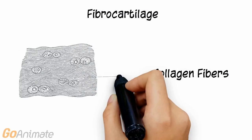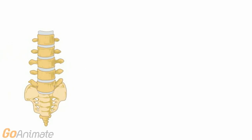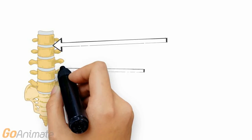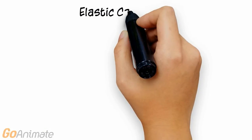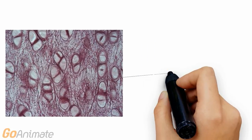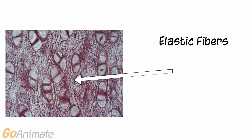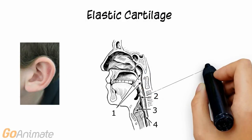Fibrocartilage contains chondrocytes and collagen fibers. The discs in your spine contain fibrocartilage. It can also be found in the symphysis pubis and the knee cartilage. Elastic cartilage contains chondrocytes and elastic fibers, and can be found in the ear and epiglottis.